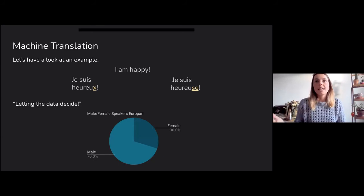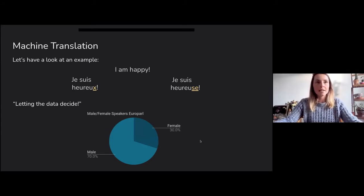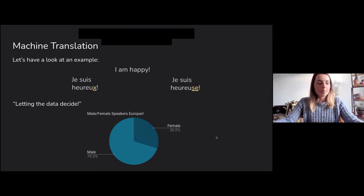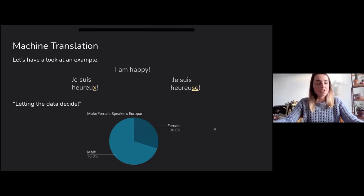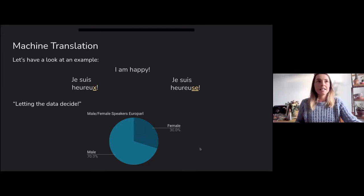The current way this is dealt with — or not dealt with — is by feeding a lot of data and letting the data decide. The problem with that is that when we analyzed one of the most popular corpora for machine translation, Europarl — the proceedings of the European Parliament — we saw that only 30% of the speakers are female. Of course, this will have consequences for the translations and certain preferences of endings that are generated.